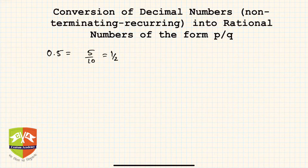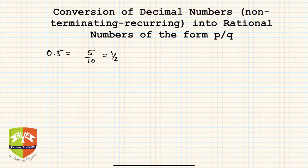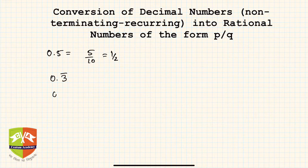In this session, what we are going to target is pure non-terminating recurring decimal representation. 'Pure' means all the digits after the decimal repeat in a particular pattern. For example, pure non-terminating recurring decimals are like 0.3 bar, 0.21 bar, or 0.316 bar — these are all pure non-terminating recurring decimals.